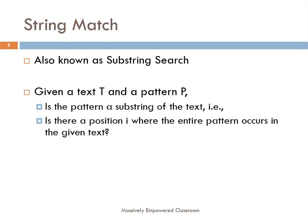We are given a text T — let us say its length is N — and we are given a pattern P — let us say its length is M, and M must be less than or equal to N. If the pattern you are looking for is longer than the text, the text could never contain that pattern as a substring. So M must be less than or equal to N, and typically it is much less than N.